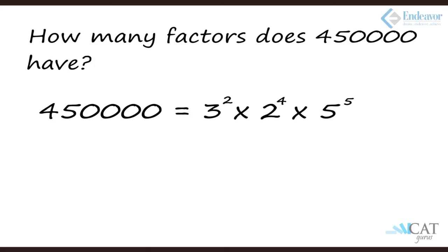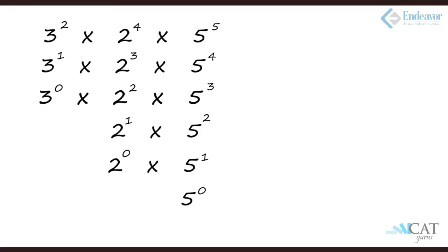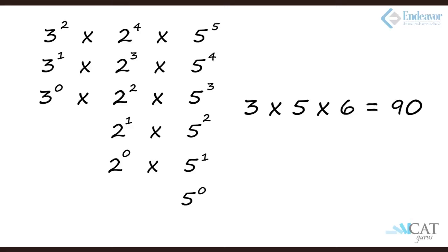Going back to the previous method: for 3 to the power 2 we get 3 options (3², 3¹, 3⁰); for 2 to the power 4 we get 5 options; for 5 to the power 5 we get 6 options. So the total number of factors is 3 × 5 × 6, which is 90. There are 90 factors of 4,50,000.